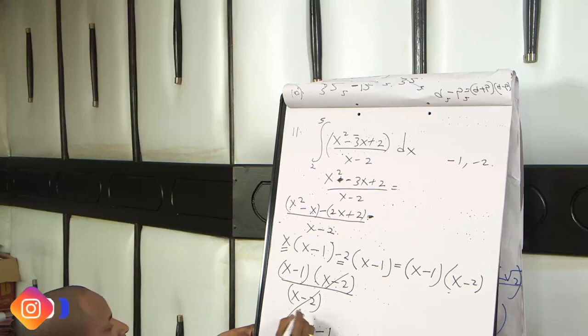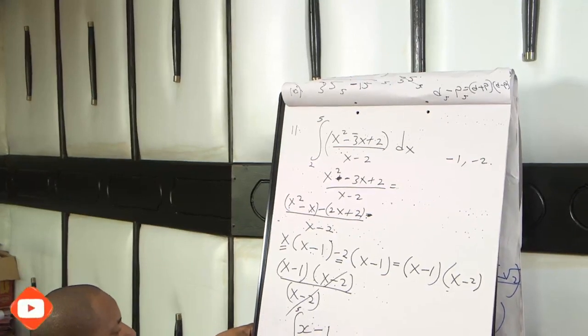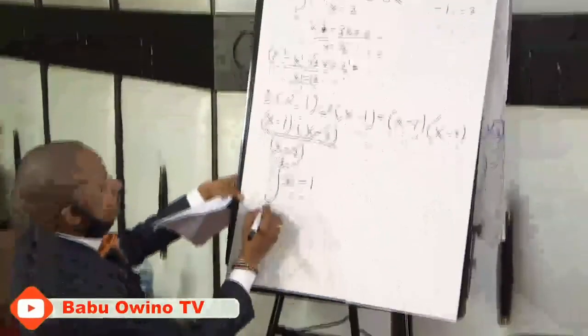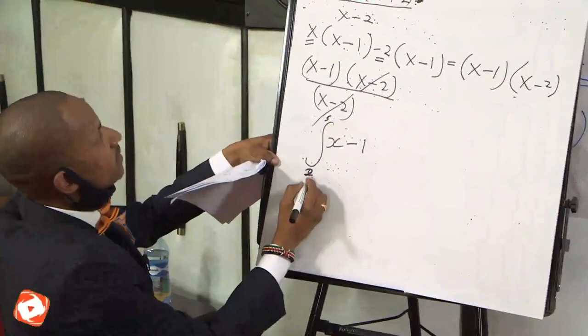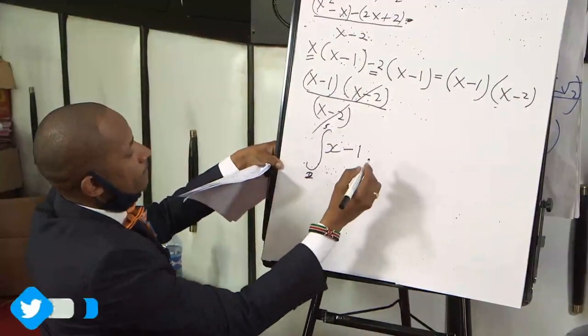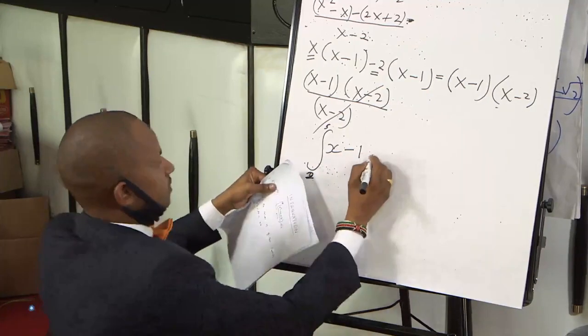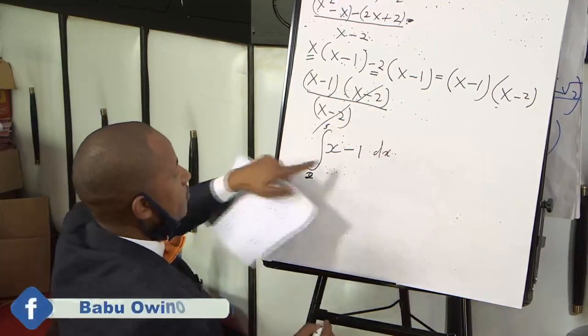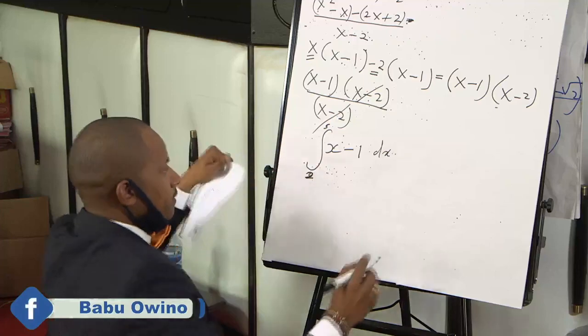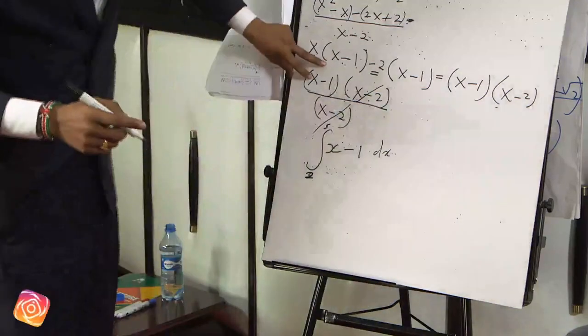So you are told to integrate this with limits of 5 and 2. So we want to integrate this value. I want to start on a fresh page on the integration.